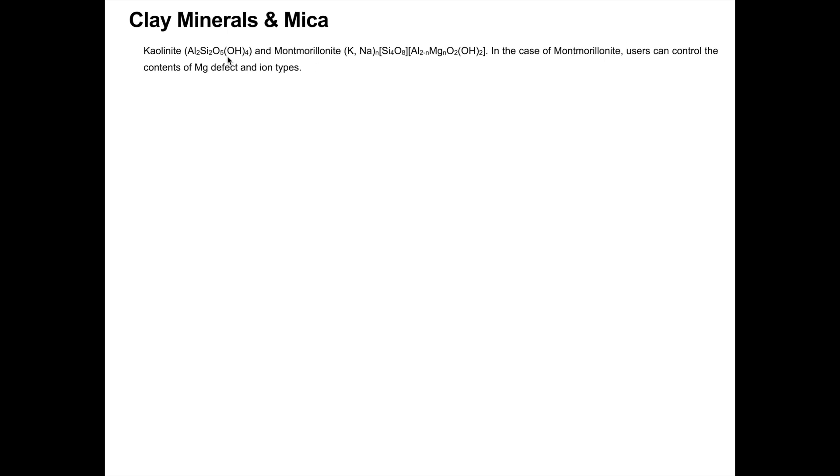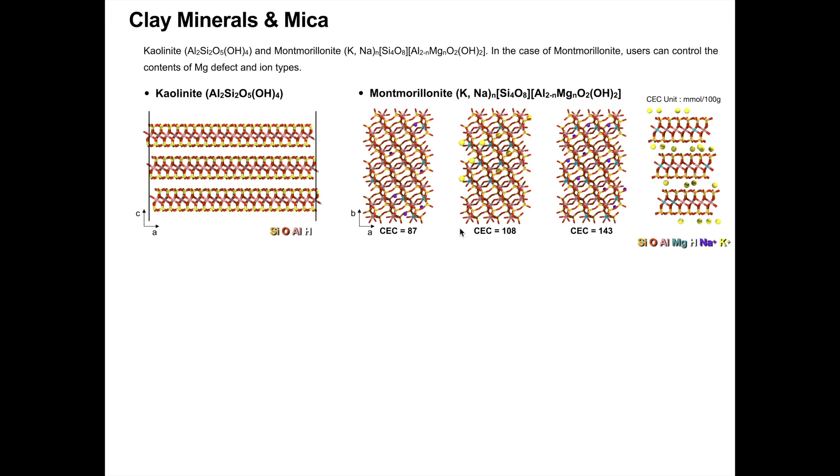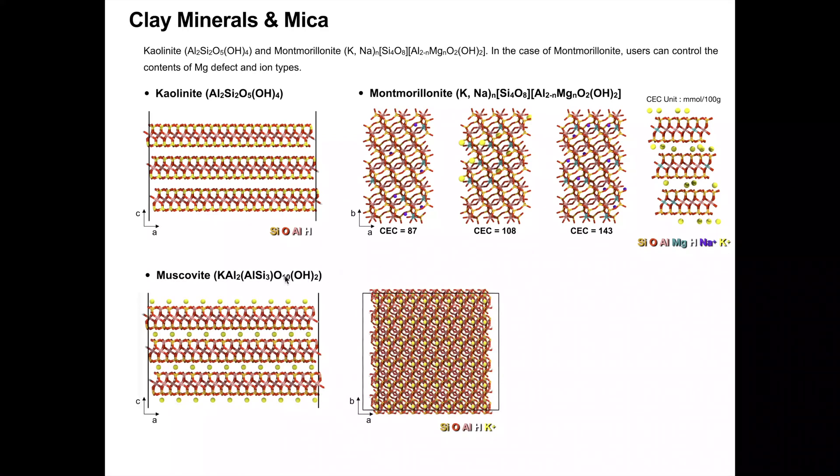The clay minerals class contains kaolinite and montmorillonite. The montmorillonite material has options to control the contents of ion defects as well as ion types. The mica class supports one type of material, muscovite.